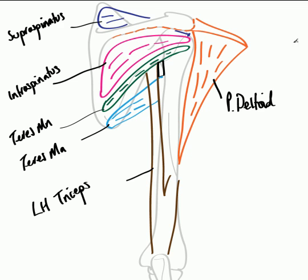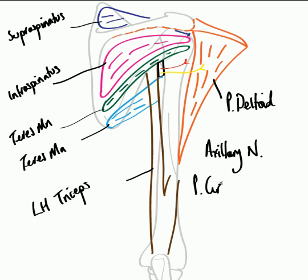Passing through this space is the axillary nerve, which goes to supply the deltoid muscle. This nerve is important as it innervates deltoid, and as deltoid is involved in abducting the arm, taking over from supraspinatus after the first 15 degrees, an important clinical test to examine the axillary nerve is by asking the patient to abduct their arm beyond 15 degrees. Also passing through the quadrangular space is the posterior circumflex artery, which loops around the neck of the humerus.